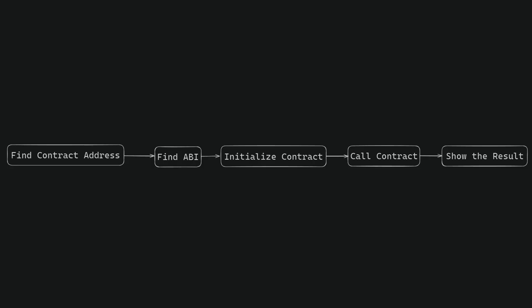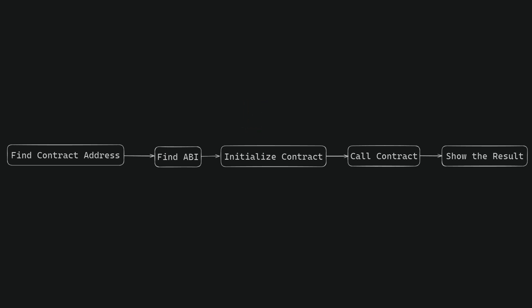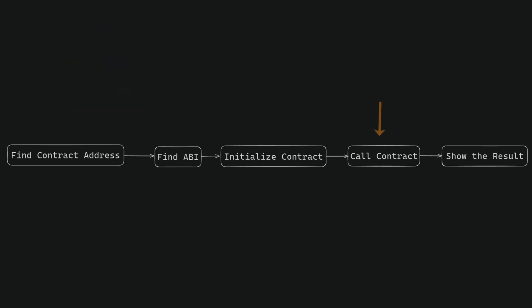This is the five step process that you need to follow to be able to interact with Data Feeds. First we need to find the contract address of the pair that we want to call. For today we are going to use the pair Bitcoin USD in the Ethereum mainnet. Then we need to find its ABI, and after that we can initialize the contract using the ABI and the address. For this we can use Web3.js, Ethers or Viem. And finally we can make the call to the contract and print the result in the console.